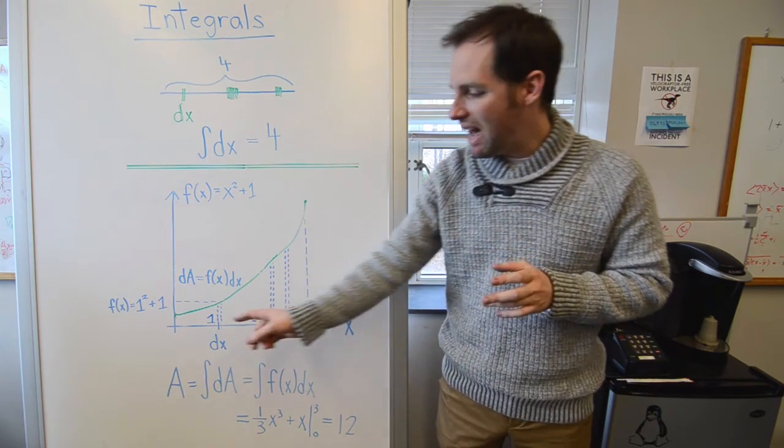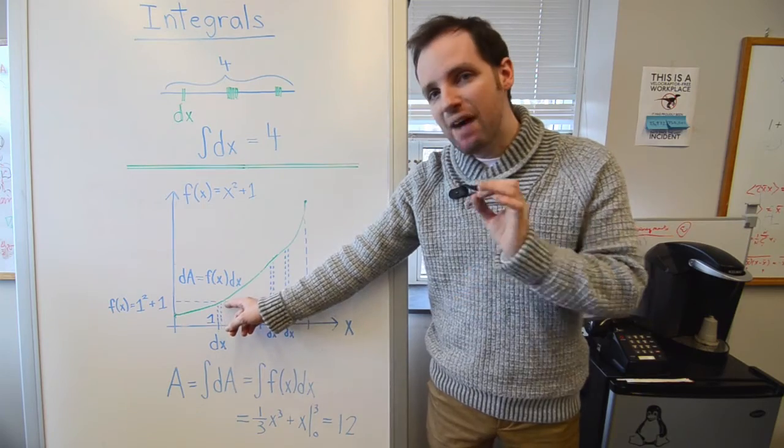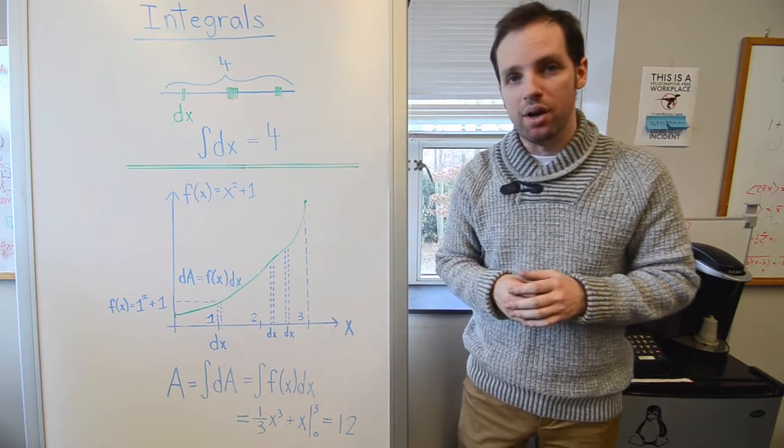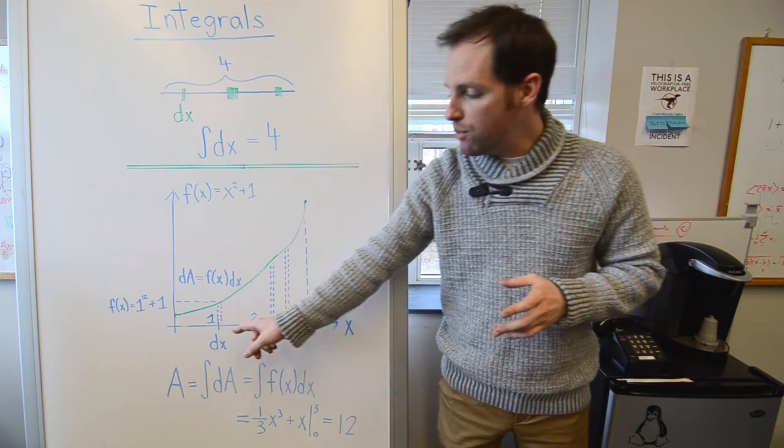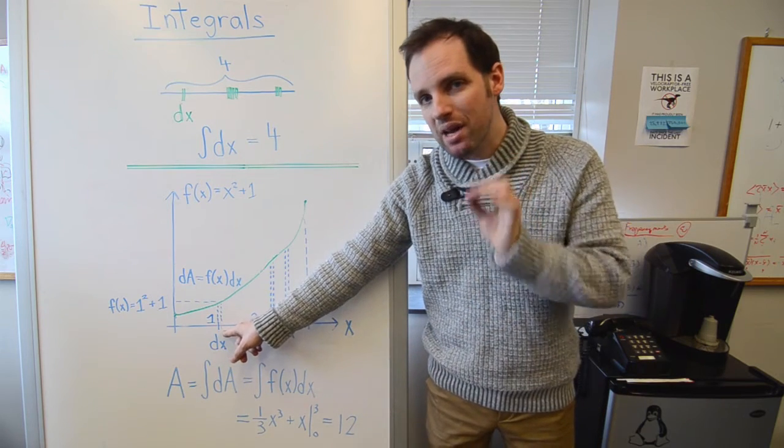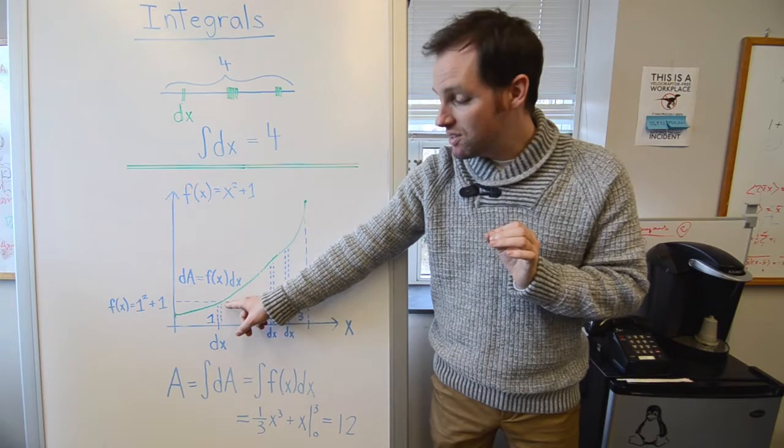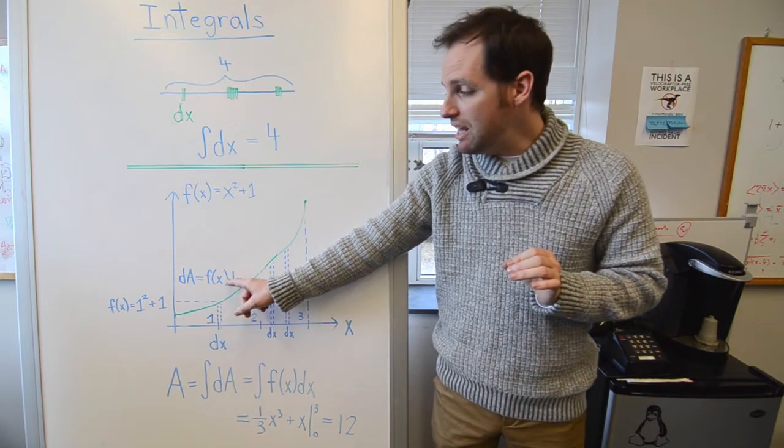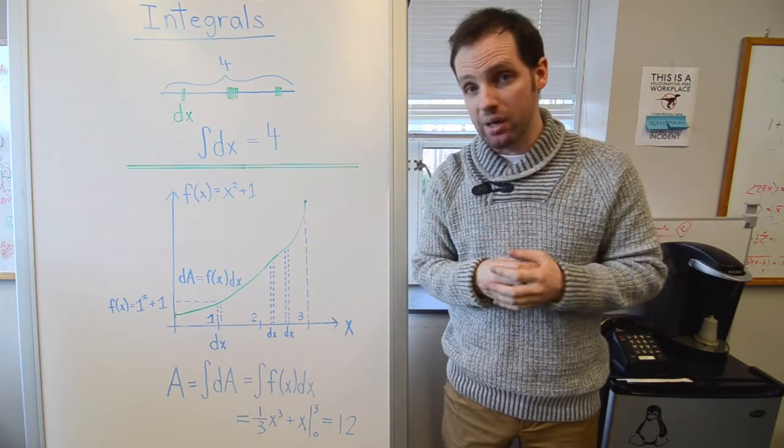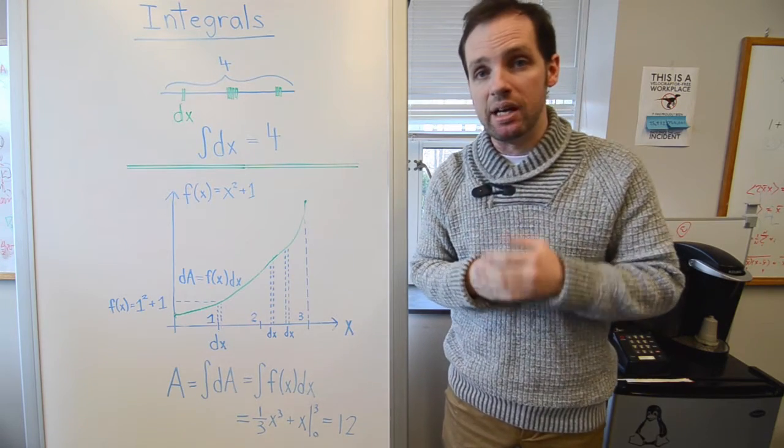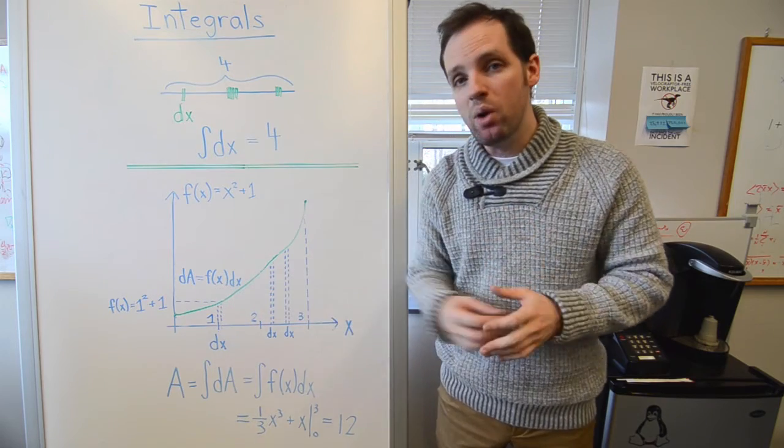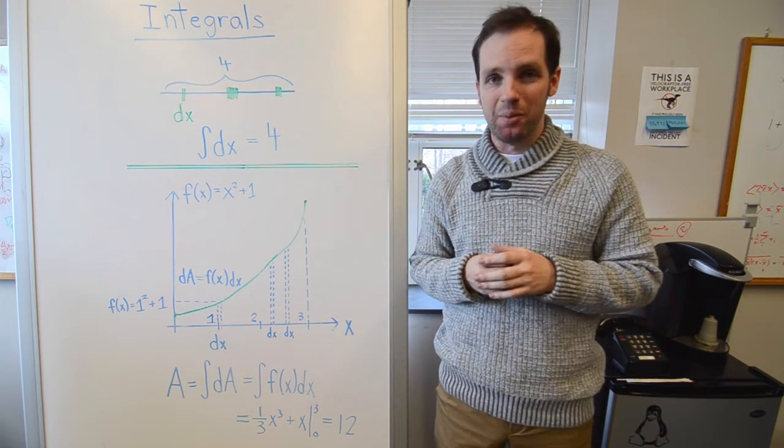Let's consider what's happening at x equals 1. The value of the function here is 1 squared plus 1 or 2. So if I were to multiply the width dx times the height f of x, I end up getting an infinitesimally small area. I can label this area dA and find that it's equal to the height times the width of that little rectangle.